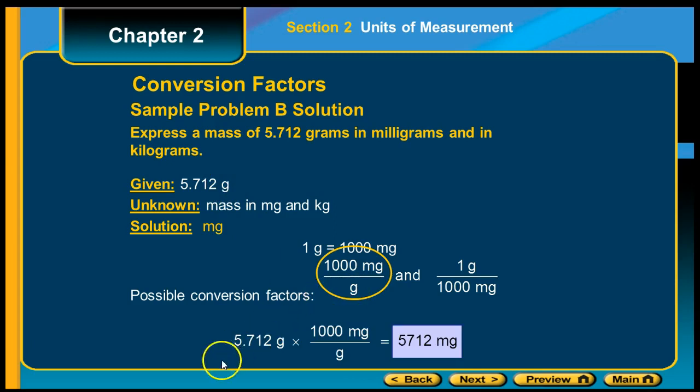We're going to set it up with 5.712 grams times a fraction. Grams go on the bottom and 1,000 milligrams go on the top, and we just multiply. So 5.712 times 1,000 gets you 5,712 milligrams. The grams cancel. We're left with milligrams, which is what we were asked to find.